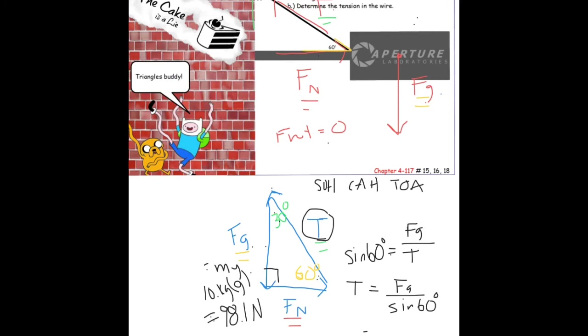The force of gravity was 98.1 and then I just divide by the sine of 60 degrees and I get a tension of 113 newtons.